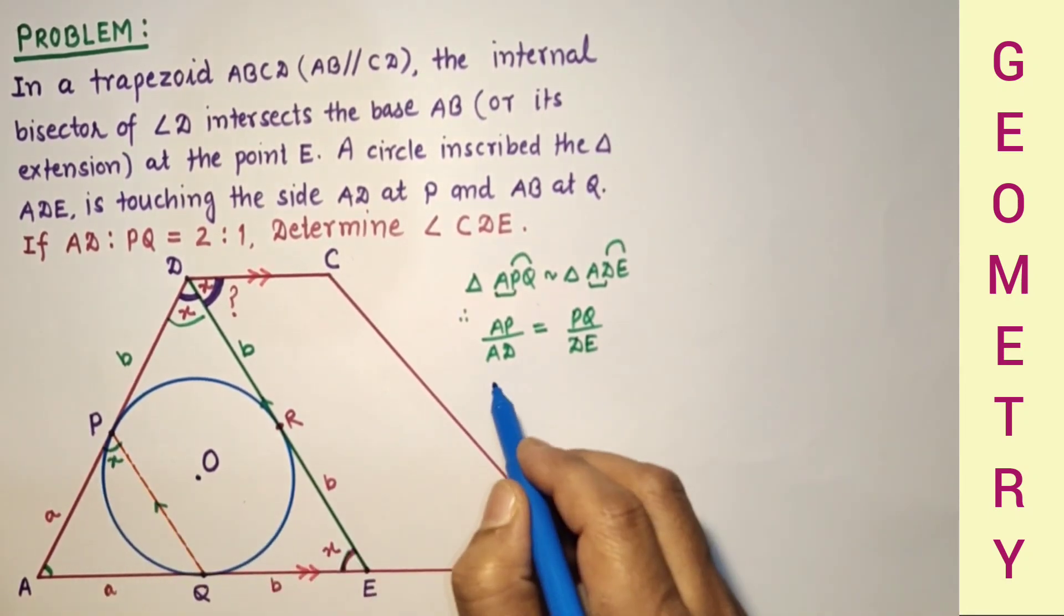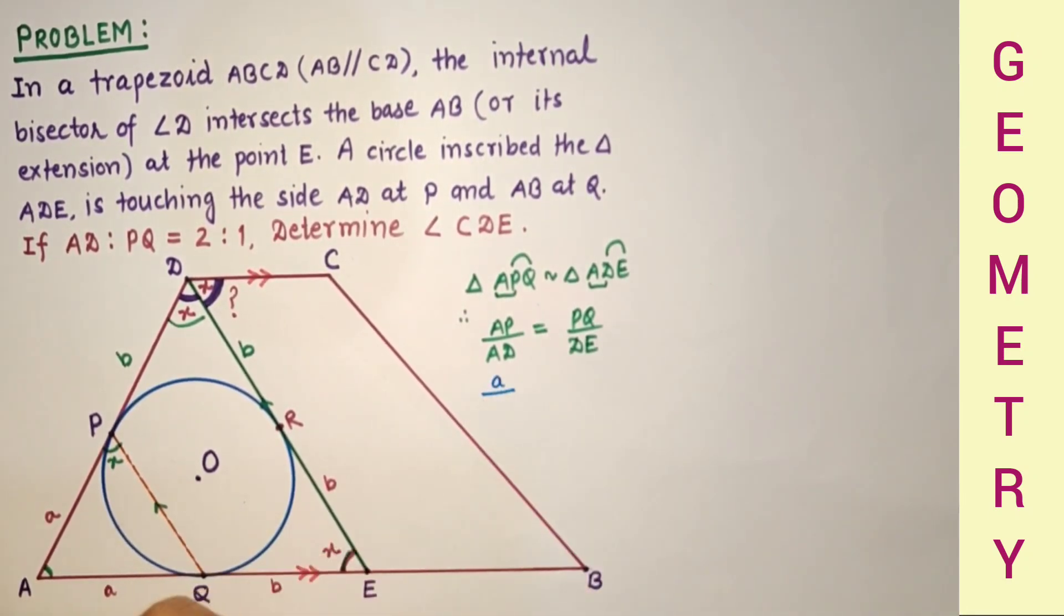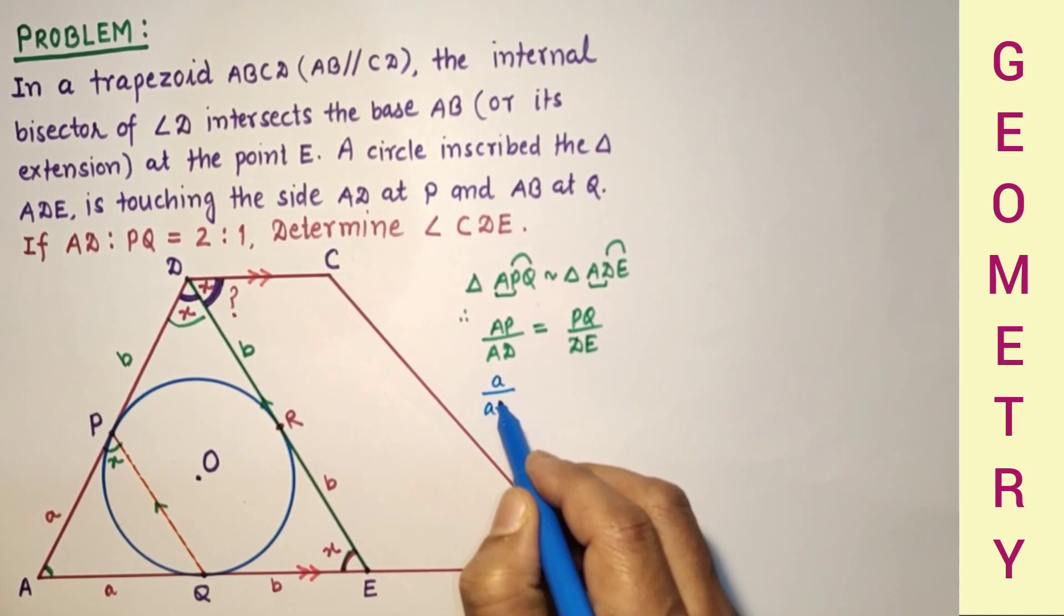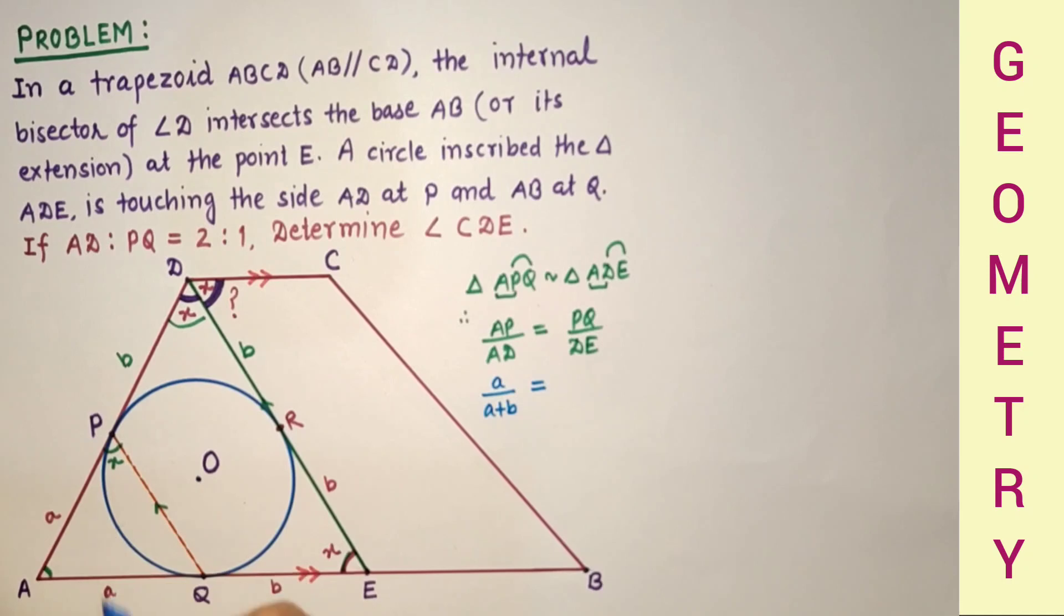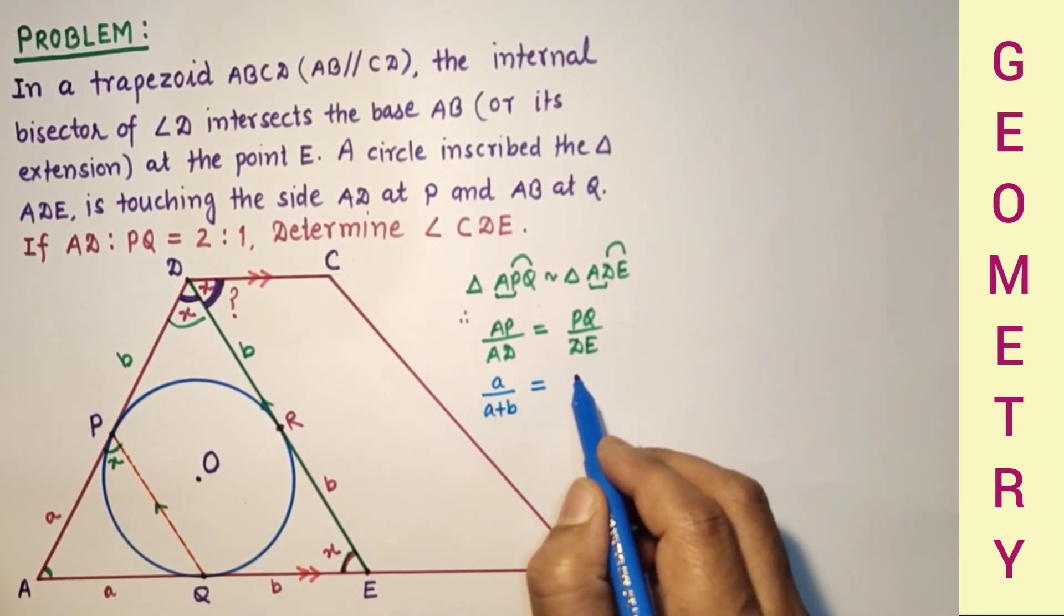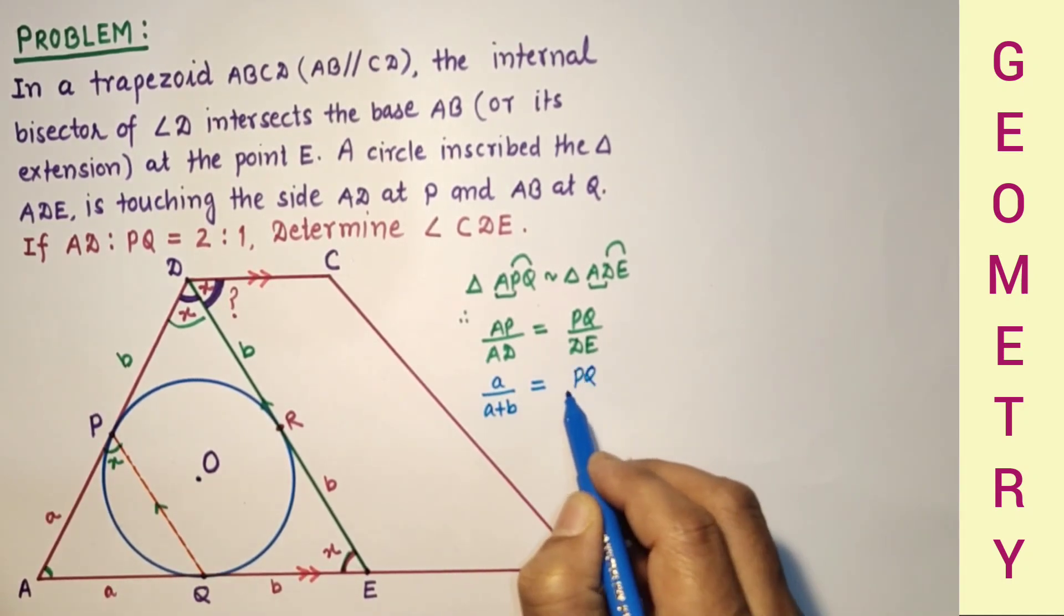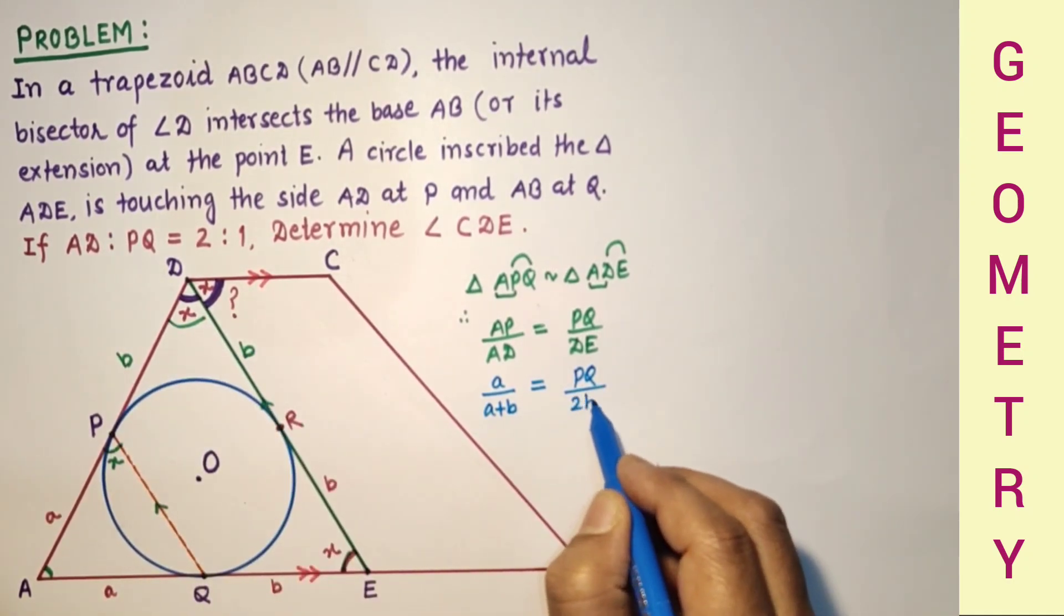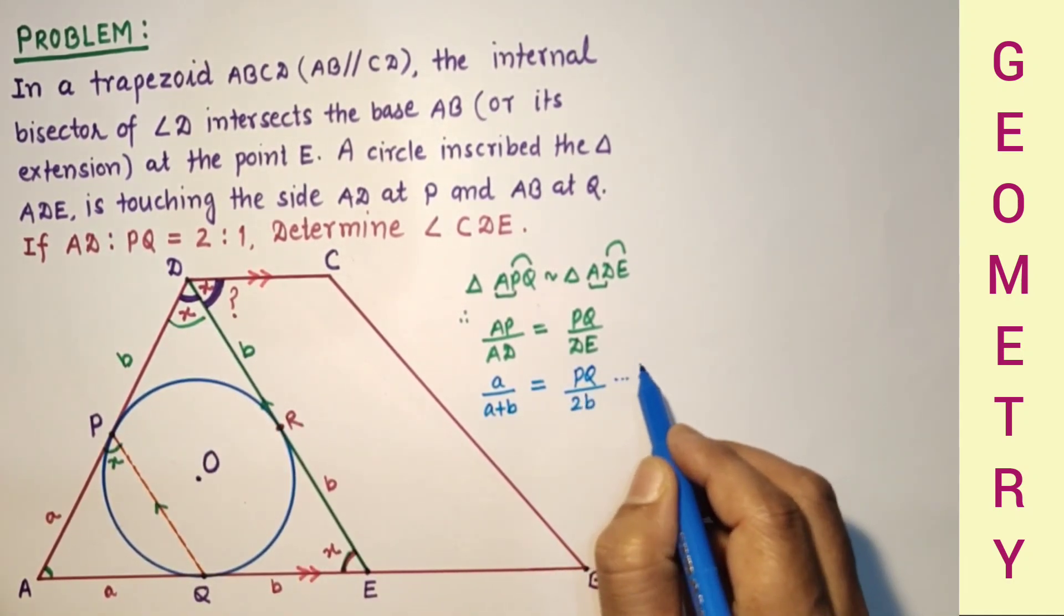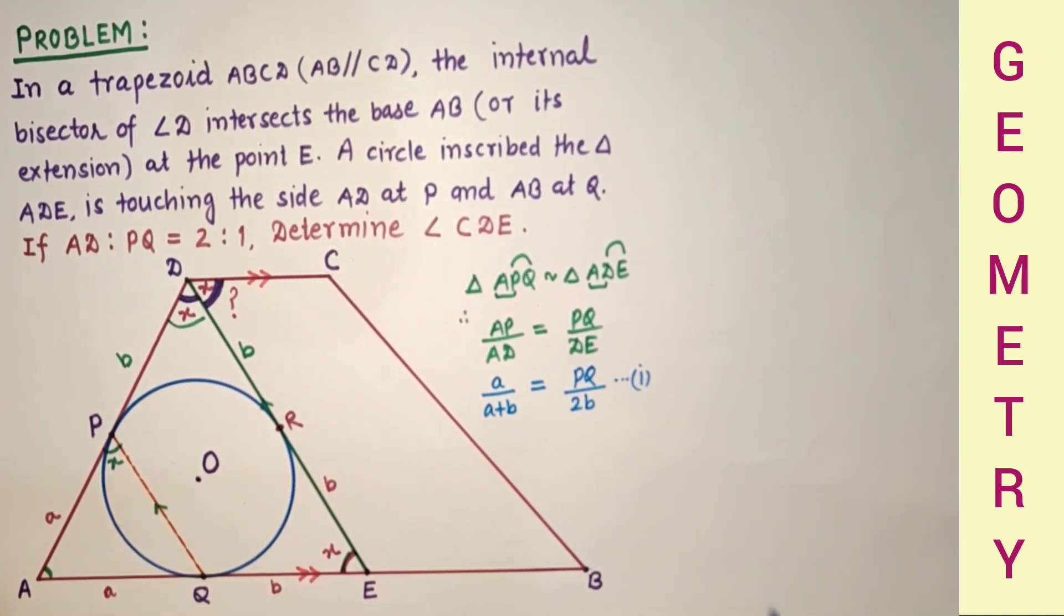AP is A, AD is A plus B. PQ we don't know, and DE we know is B plus B, which is 2B. This is one relation.